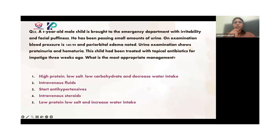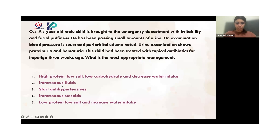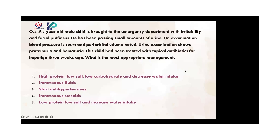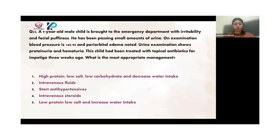A male child is brought to the ED with irritability and facial puffiness. He has been passing small amounts of urine. On examination, blood pressure is 160/90 and periorbital edema is noted. Urine examination showing proteinuria and hematuria. The child has been treated with topical antibiotics for impetigo three weeks ago. What is the most appropriate management? This sounds like nephrotic syndrome? Nephrotic? Is it nephrotic — or glomerulonephritis? What are the features of nephrotic and what are the features of nephritic?